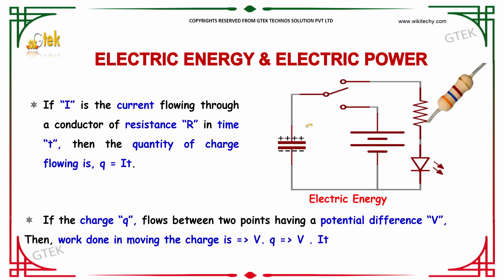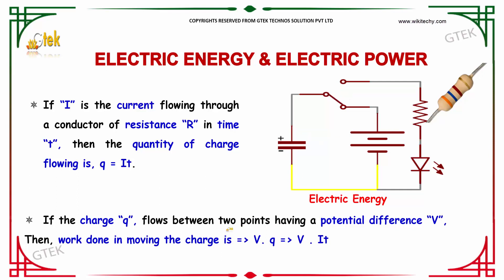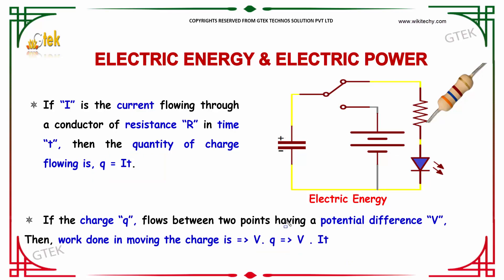If I is the current that flows through a conductor of resistance R in time t, then the quantity of charge is given by Q equals I times t. If the charge Q flows through two points having a potential difference of V, then the work done in moving the charge is given by V times Q, and since Q equals I times t, this becomes V times I times t.